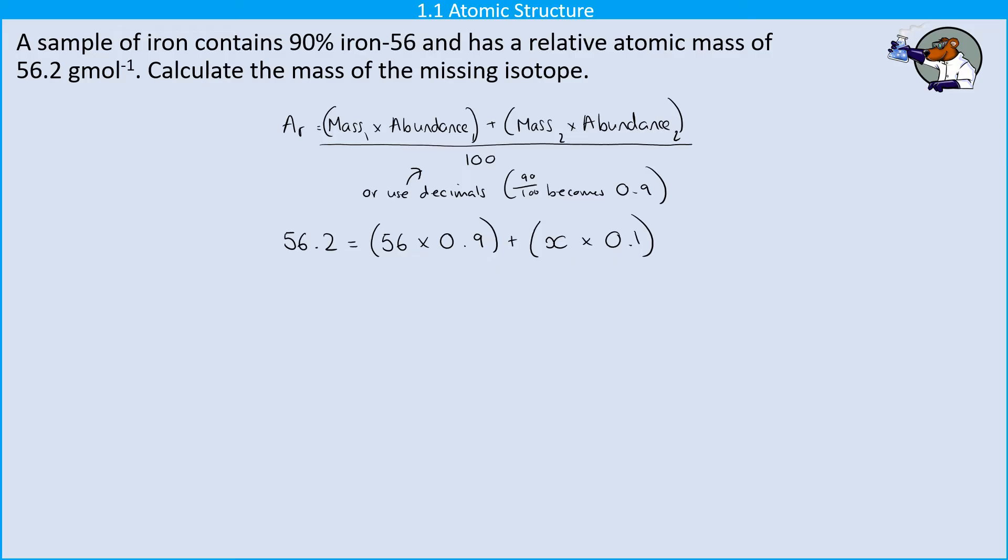For my second one I don't know what the mass of that isotope is yet so I'm just using x and I know that it's going to have an abundance of 10 percent or 0.1 and the reason that I know that is that this is percentage data.